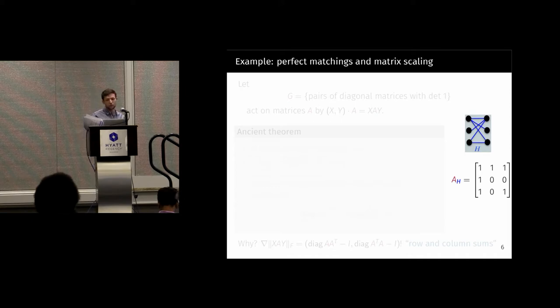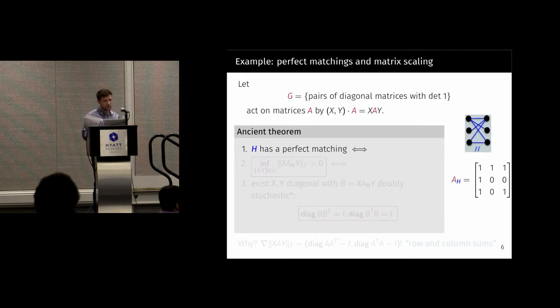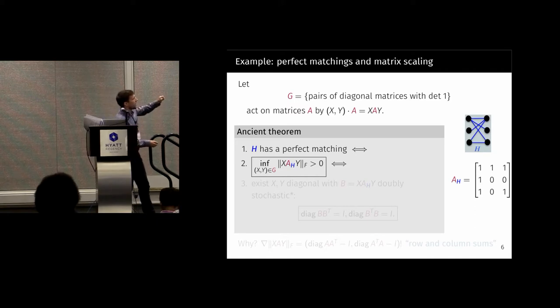Here's an example, a familiar example hopefully. If you have a bipartite graph, one way to tell if it has a perfect matching or not is to look at its incidence matrix and actually look at this group action. So this is going to look a little strange, but it should actually be familiar if you know about Synchron's algorithm and matrix scaling. H has a perfect matching if and only if the minimum norm under this group action is bigger than zero. This group is pairs of diagonal matrices with determinant one, and you act on A by pre and post multiplying by them.